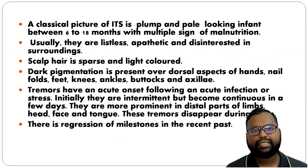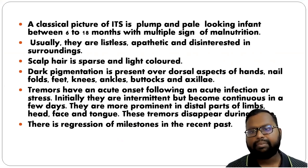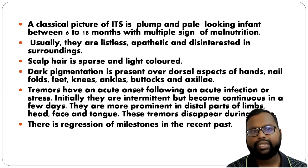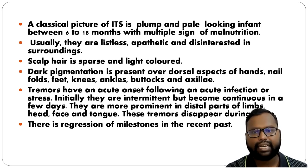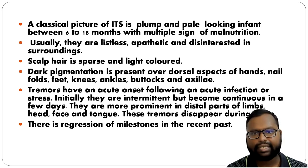The classical picture: the child is plump and pale-looking, typically aged 6 to 18 months, having multiple signs of malnutrition. The child is usually apathic, expressionless, and has no interest in the surroundings. The hair is sparse and light colored. You may get hyperpigmentation over the knuckles, groin fold, and buttocks.